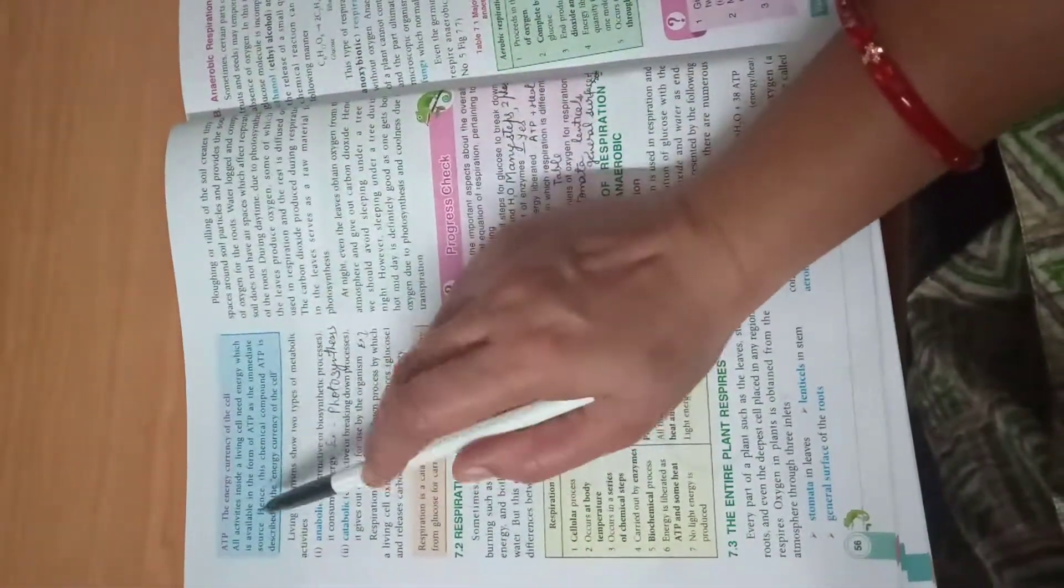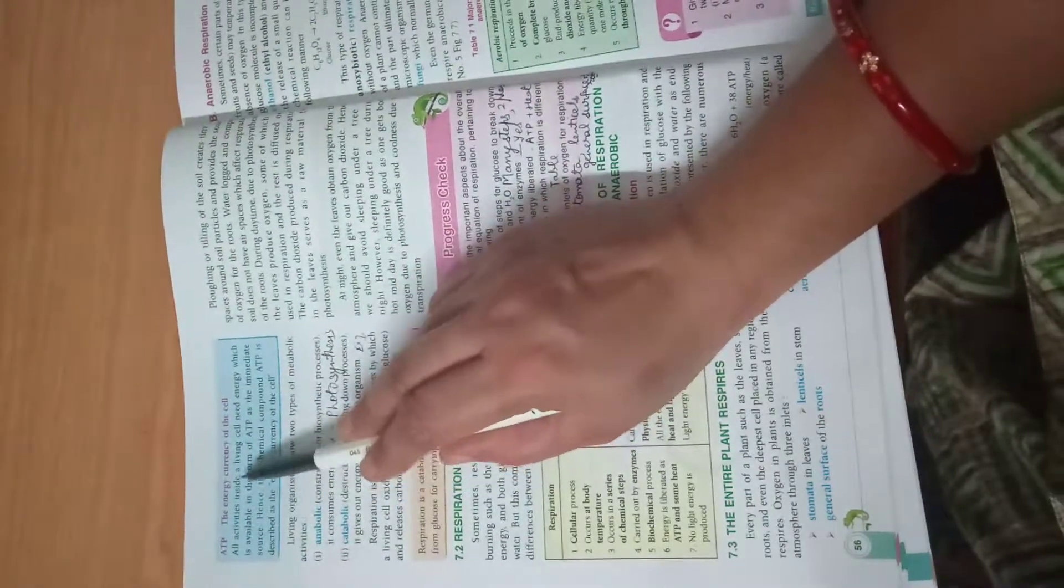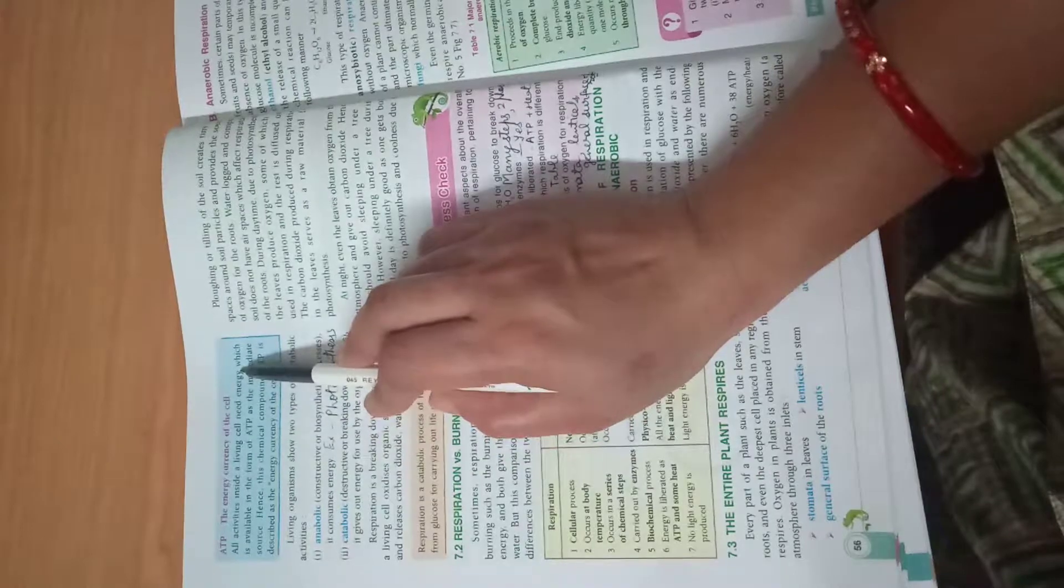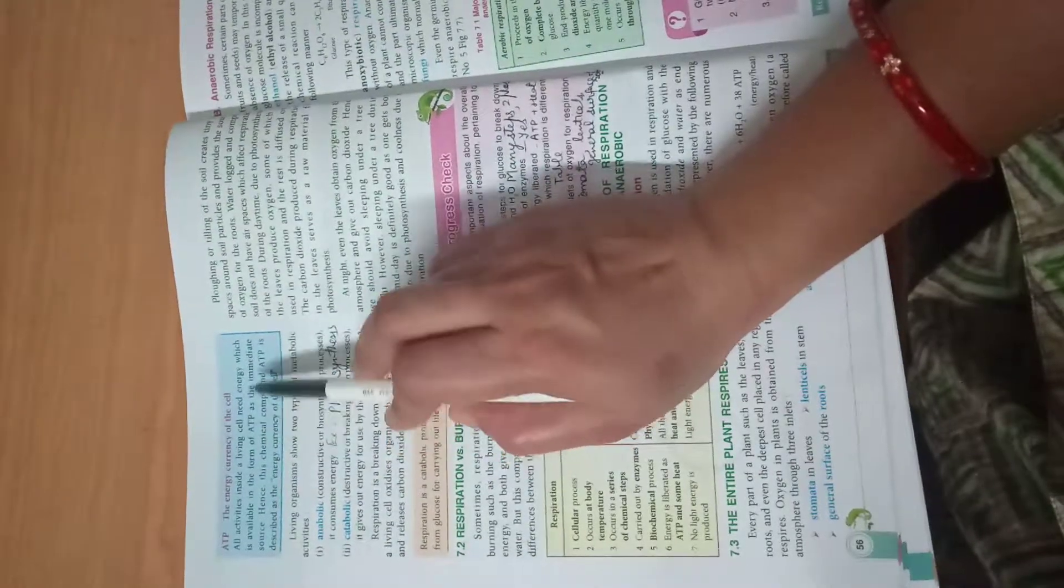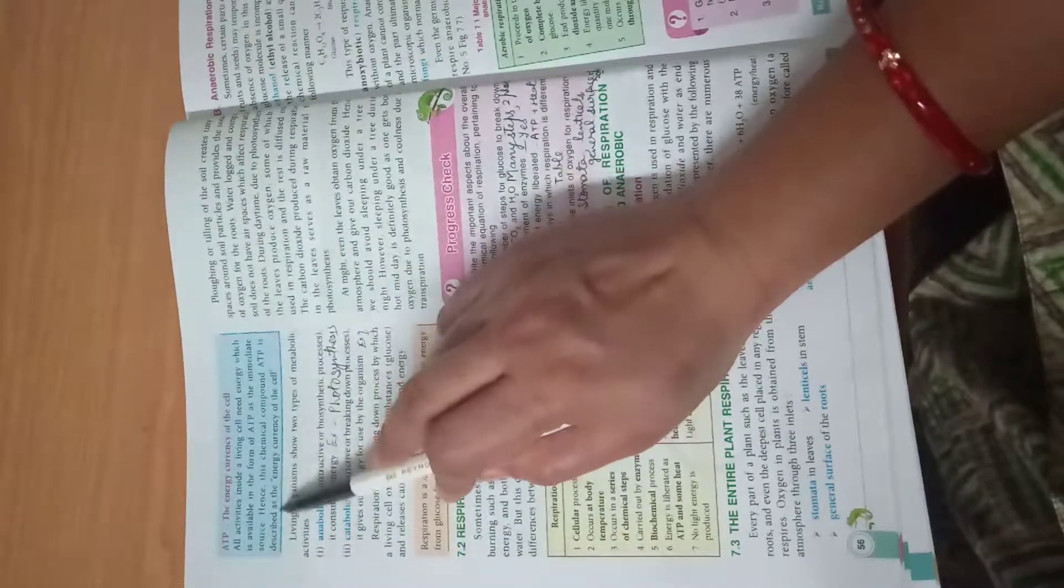We come to ATP, the energy currency of the cell. All activities inside a living cell need energy, which is available in the form of ATP as the immediate source. Hence, this chemical compound is described as energy currency of the cell.